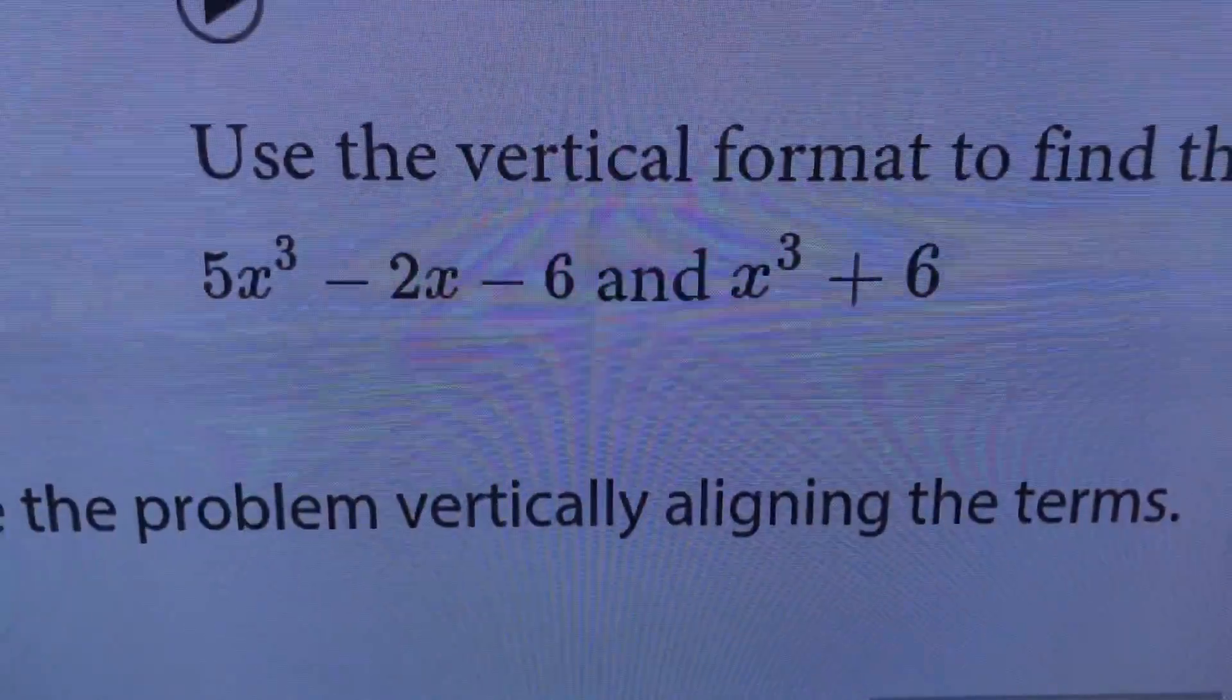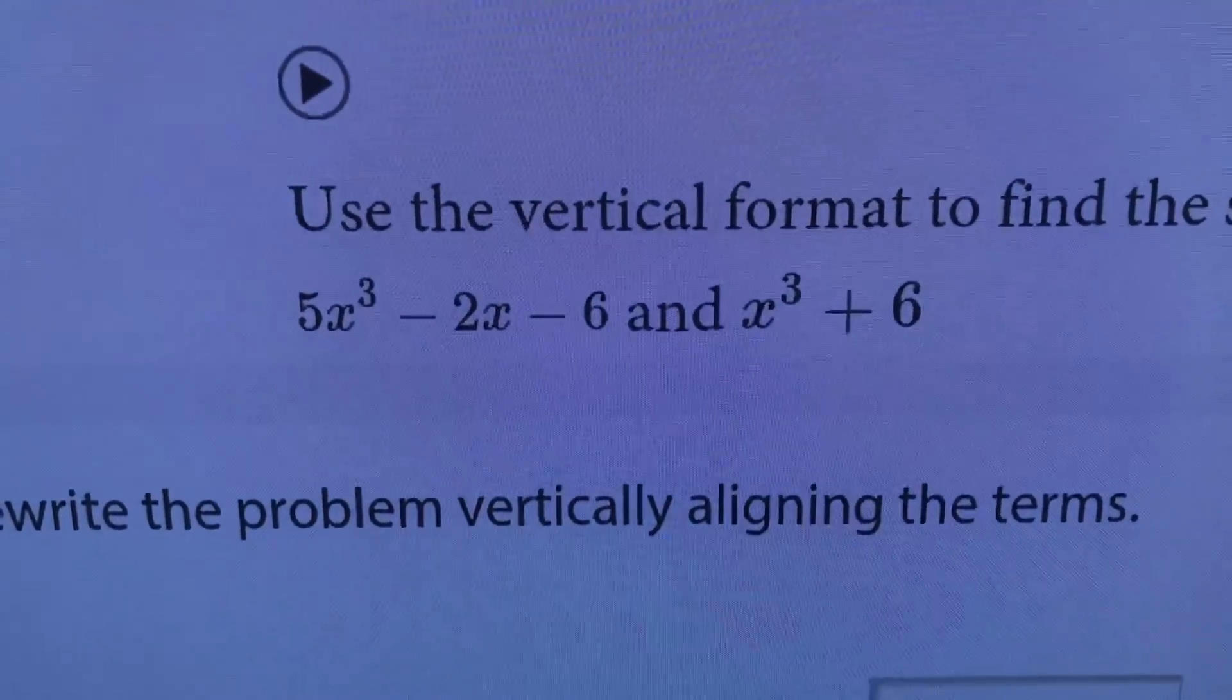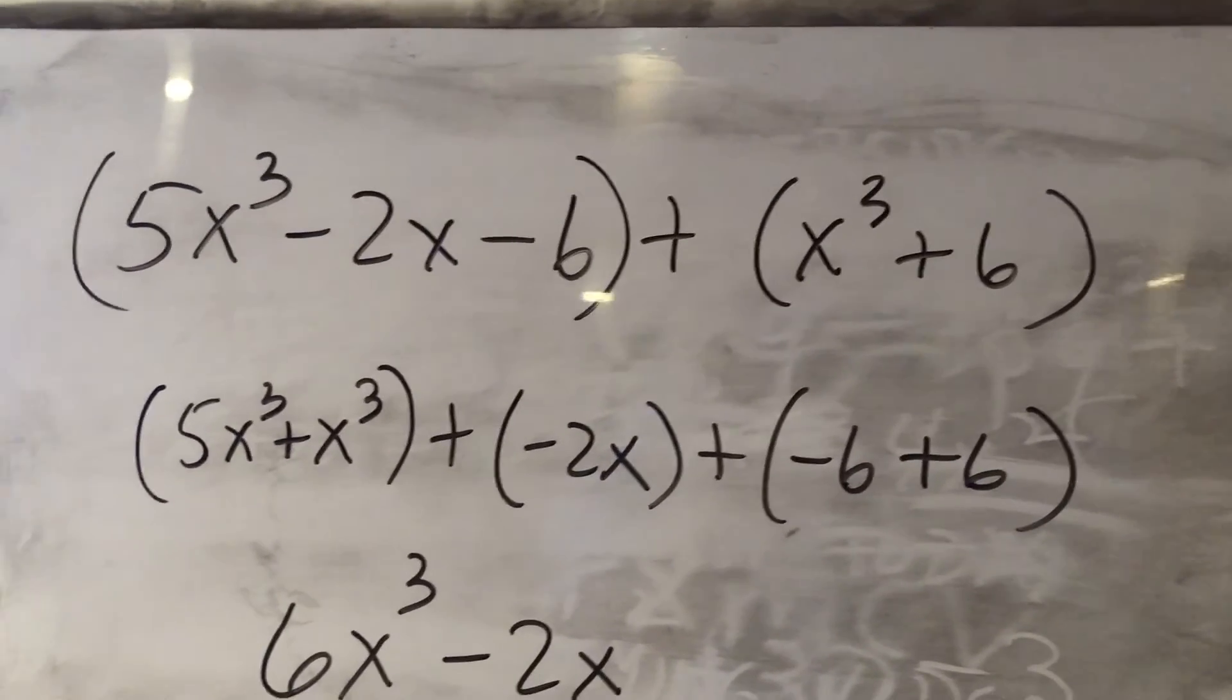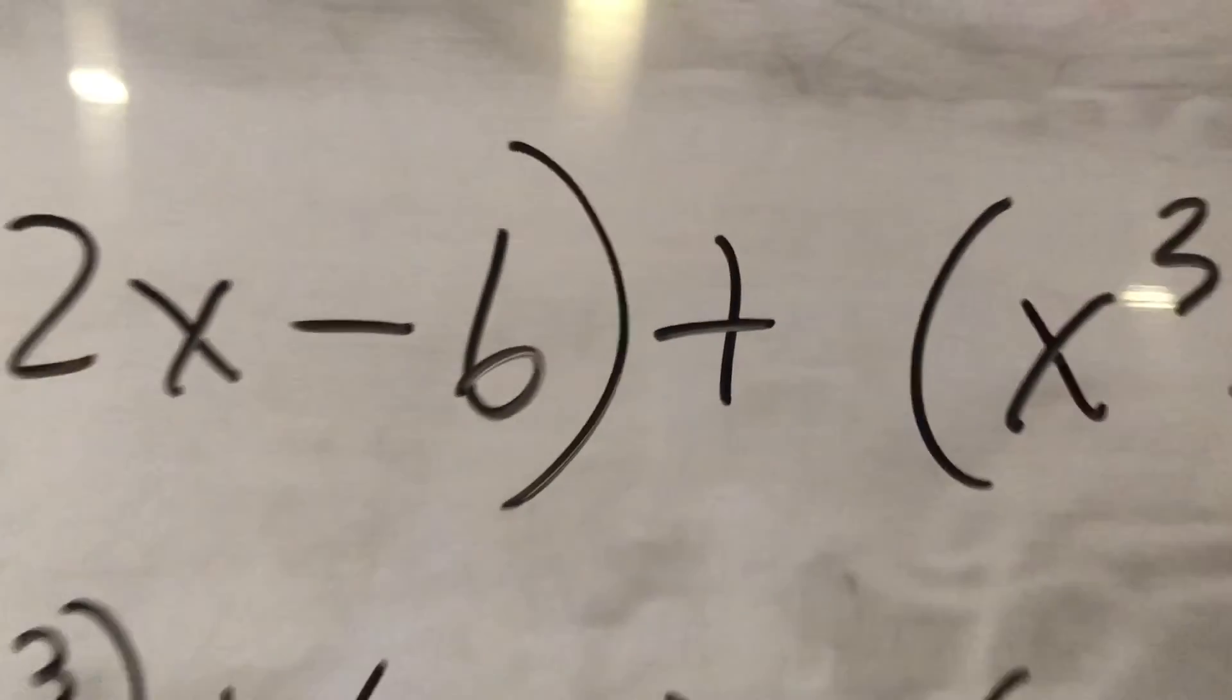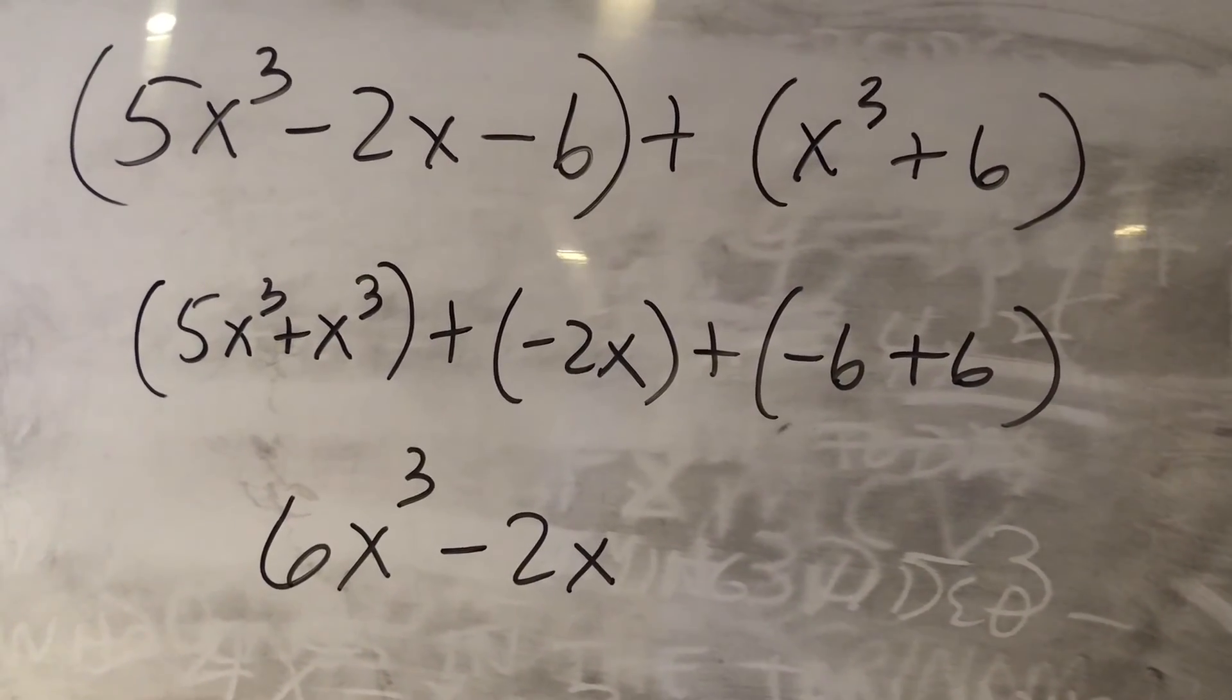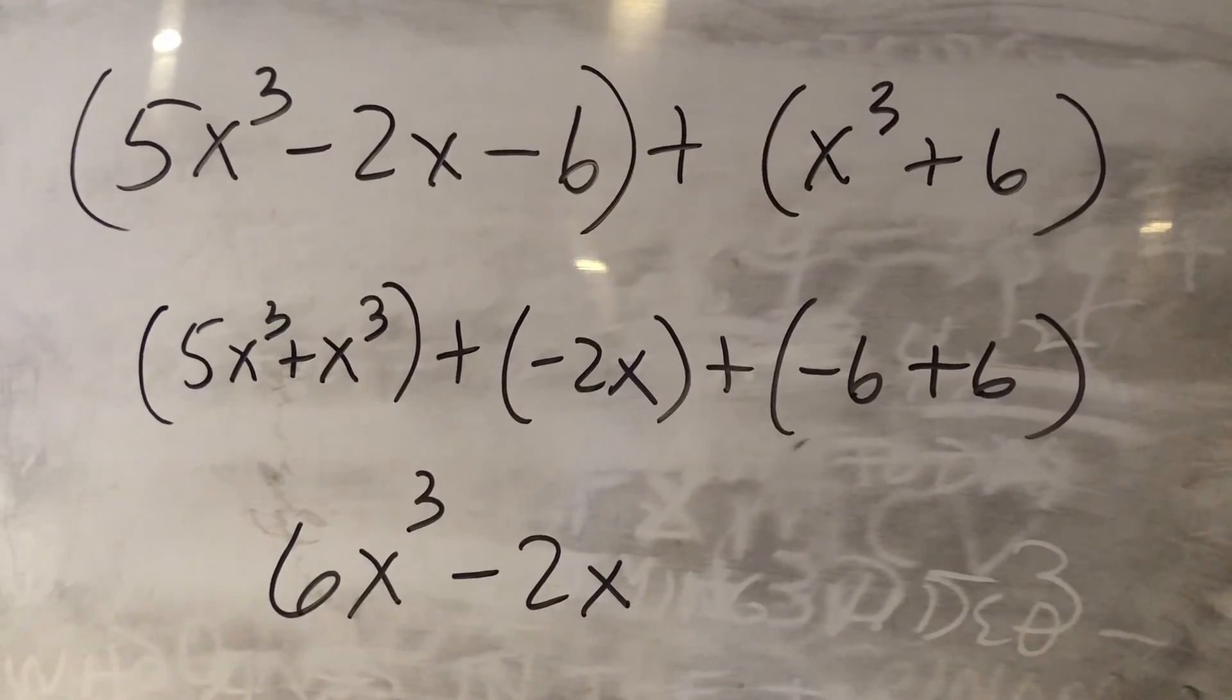Now you're going to try one. Okay so you're going to do this one the same way, horizontal, and look for the like terms and add. Stop the video and try it. Okay so we have 5x to the third in the first quantity. I put these in quantities with a plus sign in between and I add 5x to the third plus x to the third and as you can see I get 6x to the third. Negative 2x stands alone so minus 2x, and then negative 6 plus 6 is 0. All right let's view some video.